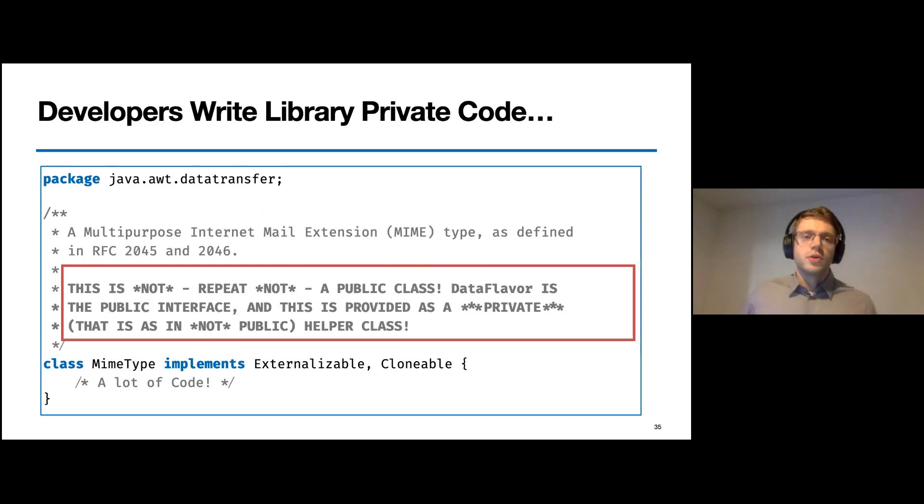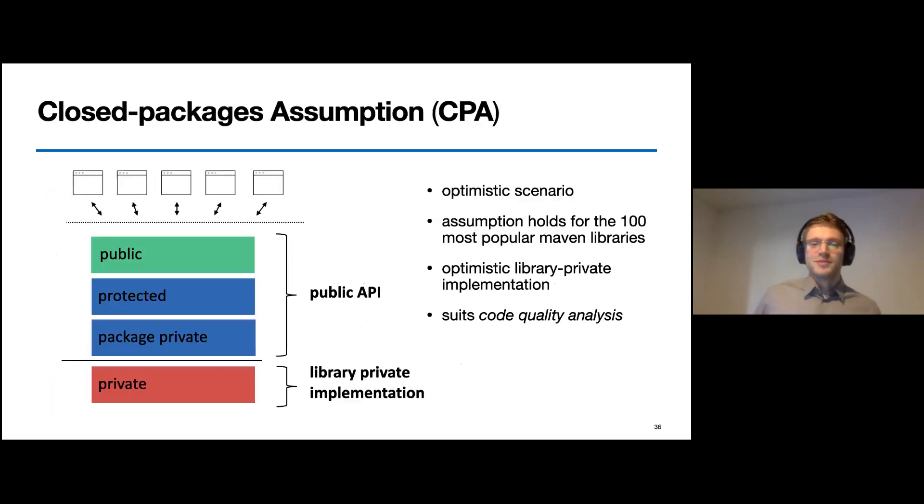But that is imprecise is not the only reason that we want to change it, because library developers also want to write code that is untouched by application developers, because it otherwise might break their library, for example. And in the JDK8, within the MIME class, we found the following comment, which reads: this is not, repeat, not a public class. DataFlavor is the public interface. And this is provided as a private, that is, a not public helper class. So obviously, someone wanted to make sure that this code is not used outside of the library. So how can we use this piece of information?